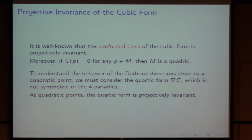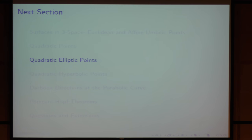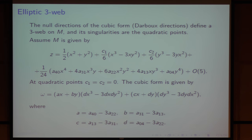To understand the behavior of the Darboux directions, which are the null directions of the cubic form, we must consider the quadratic form nabla C, which is not symmetric in the four variables. At quadratic points, this quadratic form is also projectively invariant. That's why all our results here are in P3, the projective space. I want to understand the three-web at the elliptic part of the surface. The three-web is formed by the null directions of the cubic form, which are also the Darboux directions, and they define a three-web on M.